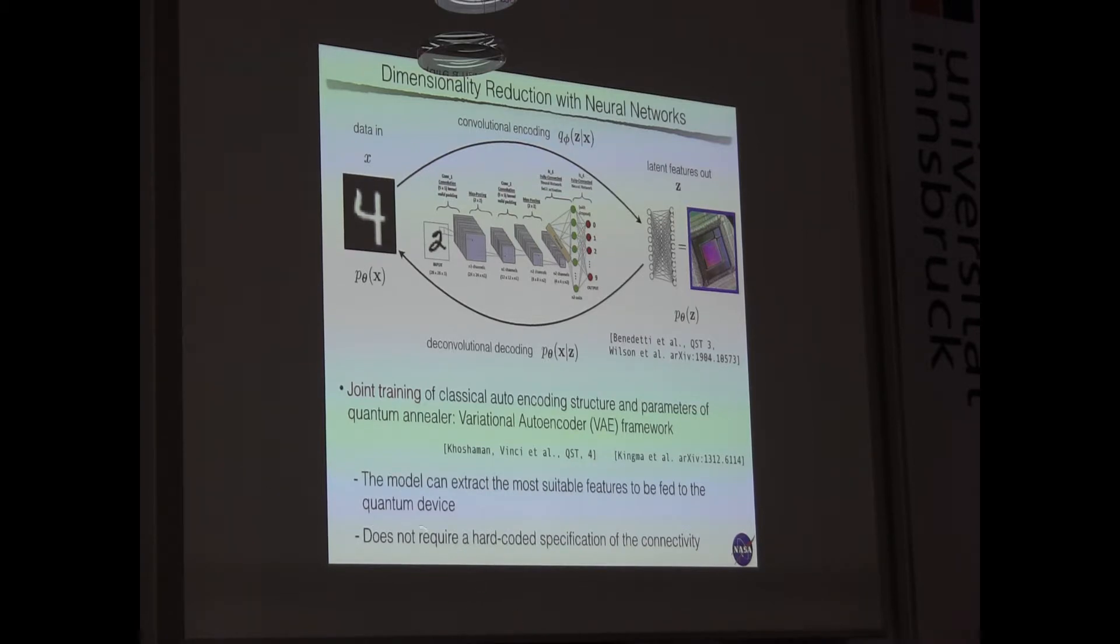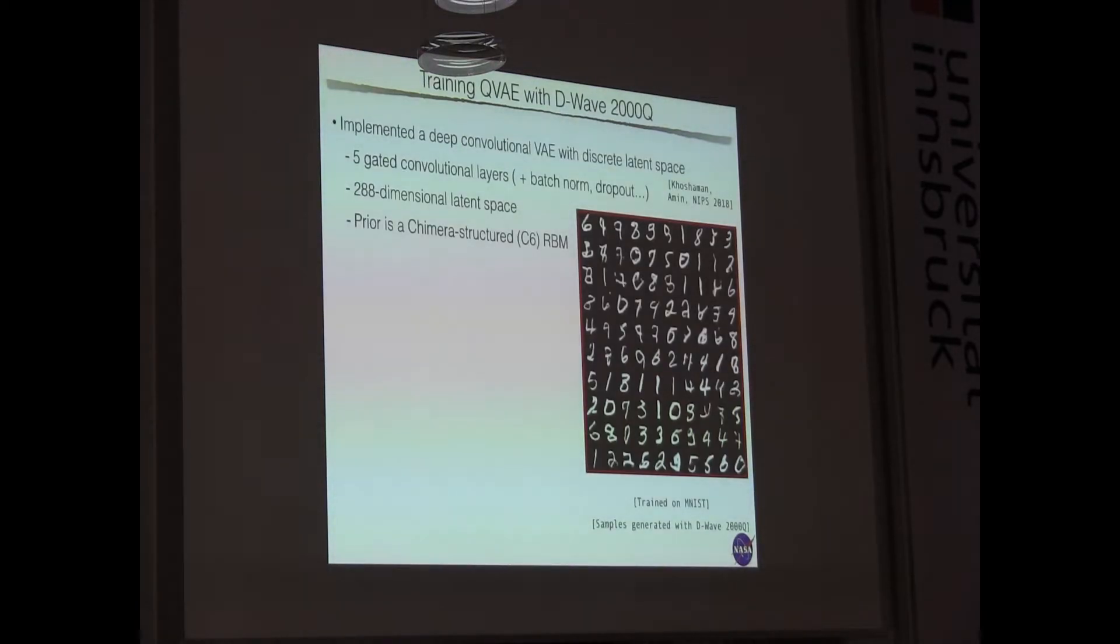And so the hope is that, because of this feedback, we teach classical networks to learn what are the best features that improve, in a way, the performance of the encoder. So we learn how to use, in the most possible efficient way, our available resources. And also another very important point is that somehow if we think about it in these terms, we don't need a hard code specification of the connectivity. So this is a very flexible and also easy to work with kind of approach.